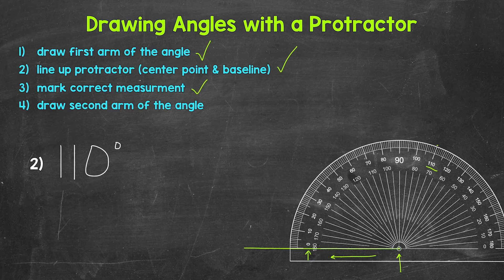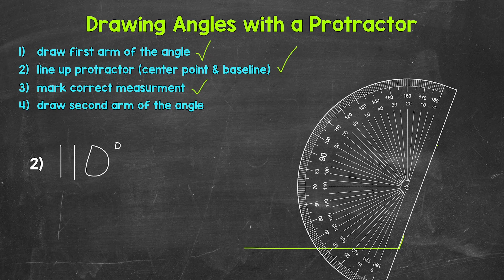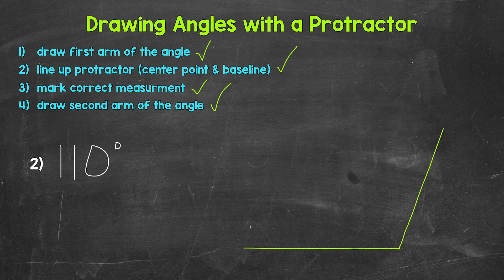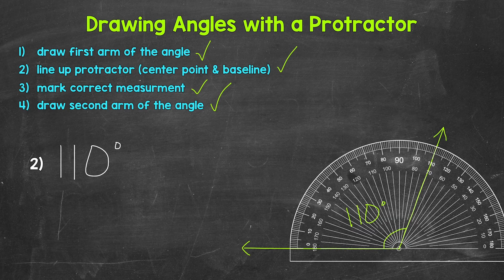And that's it for step three. Lastly, step four: we need to draw our second arm of the angle. We pick up our protractor and use a straight edge to connect our dots — the dot on the end of the first arm, where the center point was, to the dot at 110 degrees. We draw the arm from the end of the first arm to the mark we made at 110 degrees. And that's the second arm of our angle. Let's take the protractor away and draw arrows on the arms and label the angle. Let's double check to make sure we have a 110 degree angle — our protractor is lined up and it looks like we are good to go. We have a 110 degree angle.